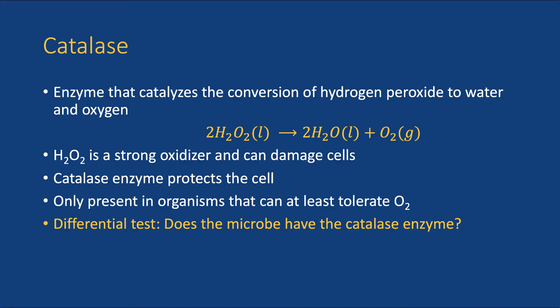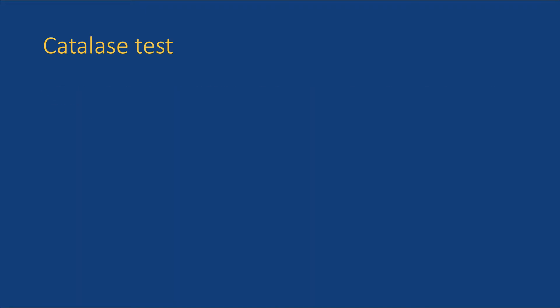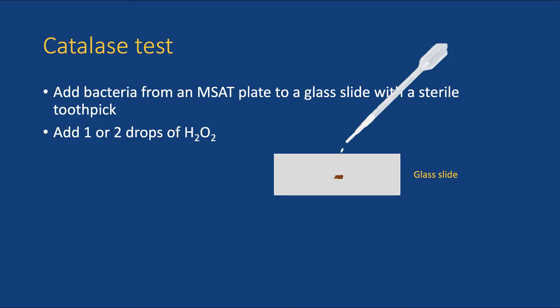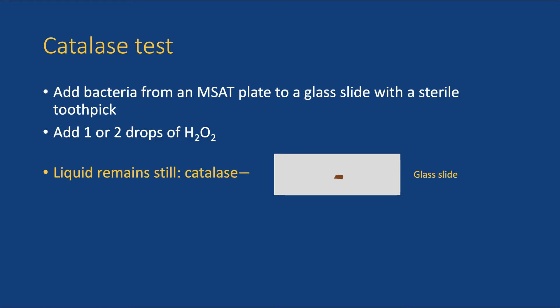To perform the catalase test, you use a sterile toothpick to pick up a colony from an MSAT plate and pile it in the center of a glass slide. Add one or two drops of hydrogen peroxide — available in your local pharmacy — on top of the bacteria. If the hydrogen peroxide remains still, the bacteria are catalase negative, which means they do not have the catalase enzyme.